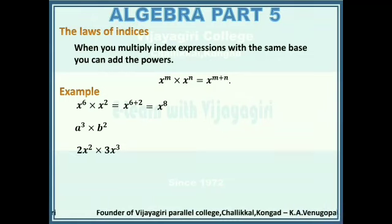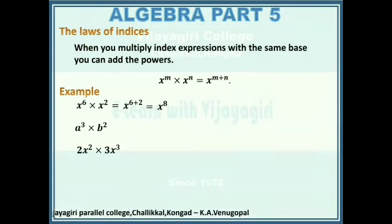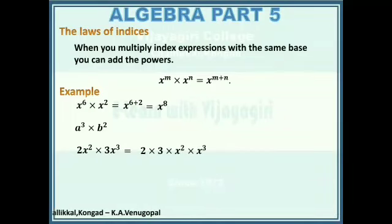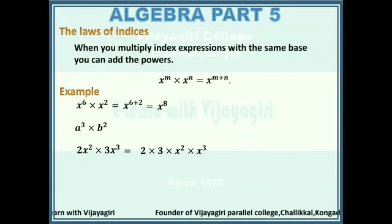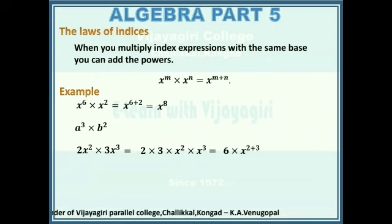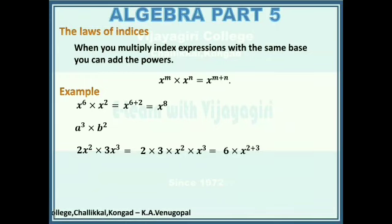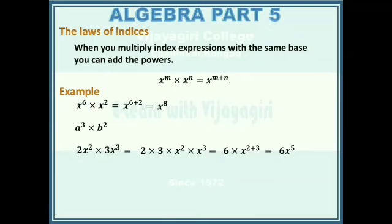2x squared into 3x to the power 3: here numbers and index expressions are coming together, so we have to expand separately. 2 into 3 into x squared into x to the power 3. 2 into 3 is 6, and x squared into x to the power 3 can be written as x to the power 2 plus 3 using the law of indices. It simplifies as 6x to the power 5.